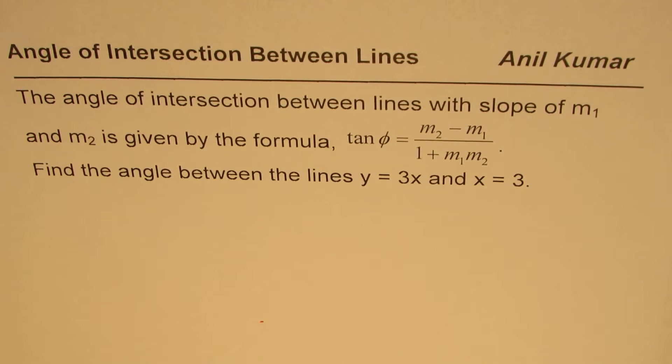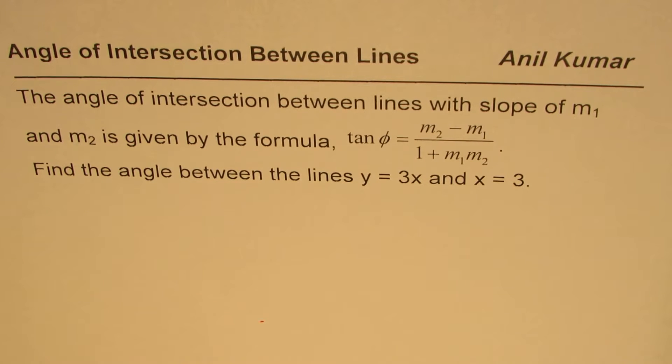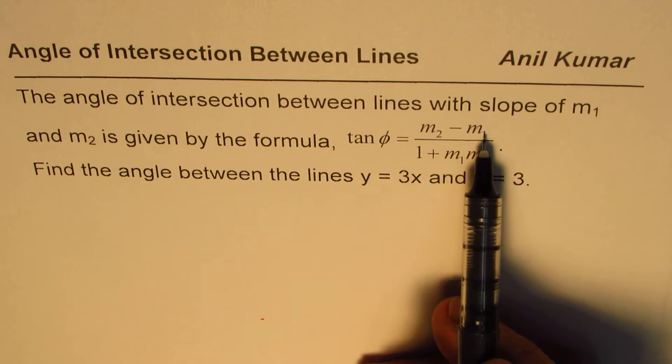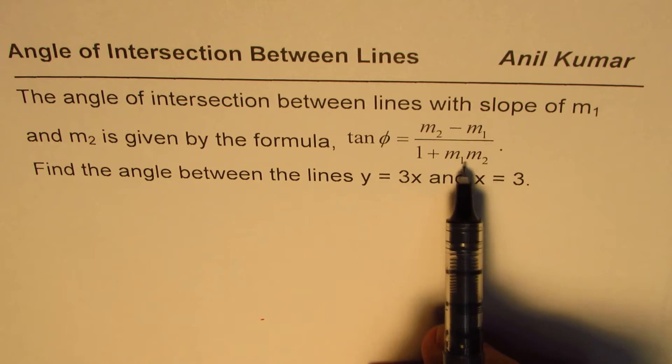I am Anil Kumar and in this video we will calculate angle of intersection between lines. The question is, the angle of intersection between lines with slope m1 and m2 is given by the formula tan phi equals m2 minus m1 divided by 1 plus m1 m2.